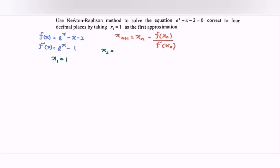We have x₂ = 1 - (e^1 - 1 - 2)/(e^1 - 1). Using the calculator, we get x₂ = 1.16395.